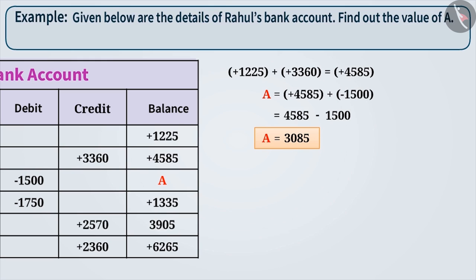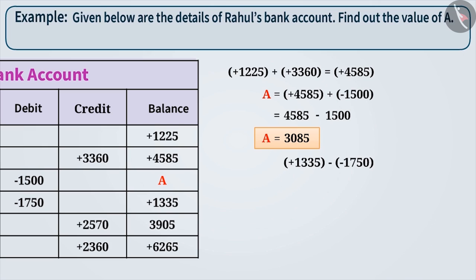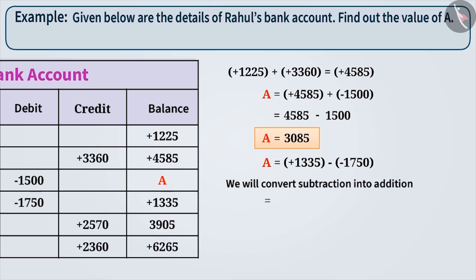We can also find this result by the subtraction operation. We can find the previous balance by subtracting the amount debited, minus 1750, from the next balance, plus 1335. In order to solve this, convert subtraction into addition. Keep the first integer as it is. Then, replace the minus sign with a plus sign and take the additive inverse of the second integer,